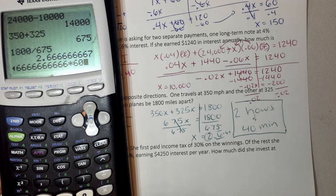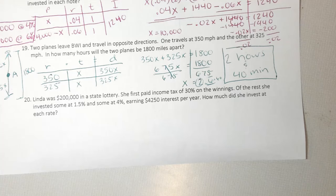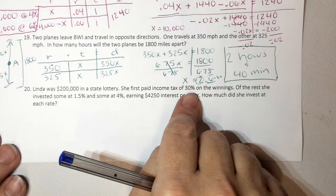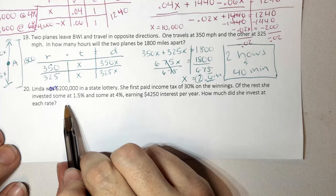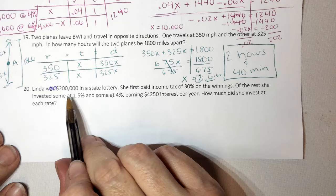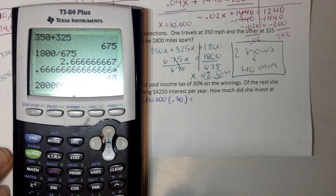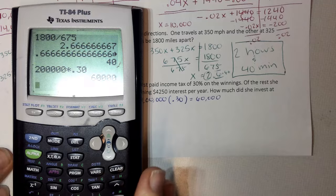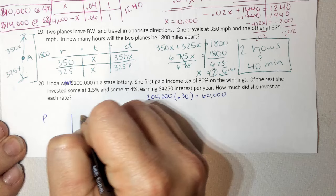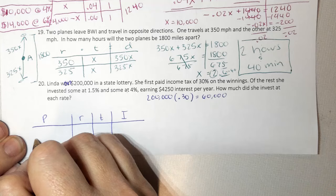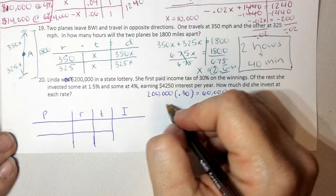So last one, this one was weird, but I did help you all in class because you had to figure out how much she was investing first. And so Lisa won $200,000 in the state lottery. She paid income tax first of 30% on the winnings. So 30% of my winnings, so $200,000 times 30%. So she paid $60,000 in taxes before she could invest anything. So this is investment. So I have to take that $60,000 out, so $200,000 minus $60,000. You won't have like a 2 for a problem like this on your test.